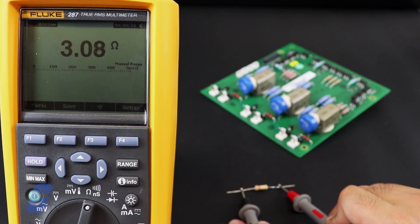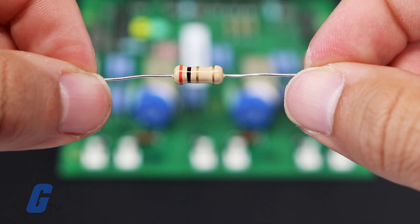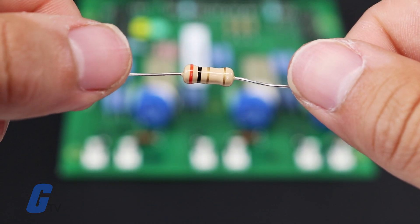To get a more accurate reading of a resistor, it will be necessary to pull one end of it out of circuit to do so.